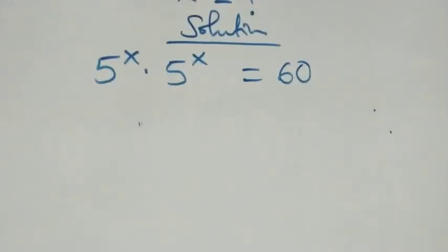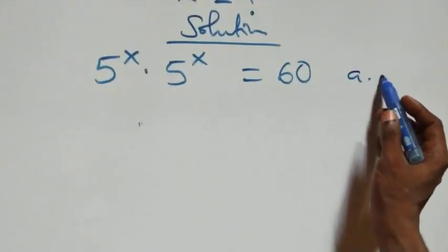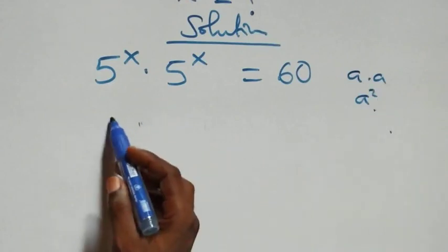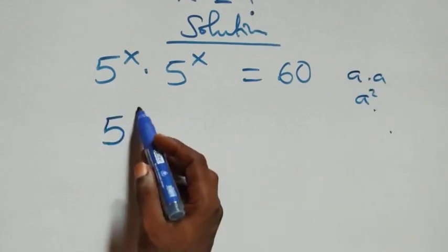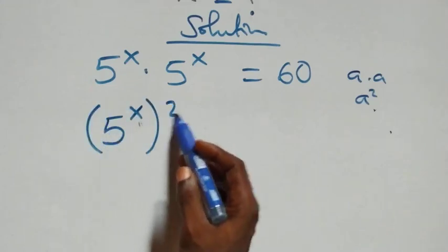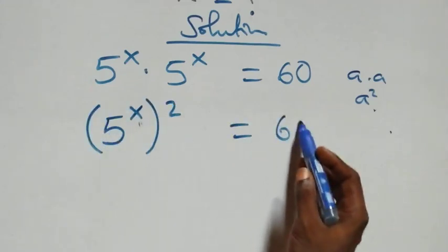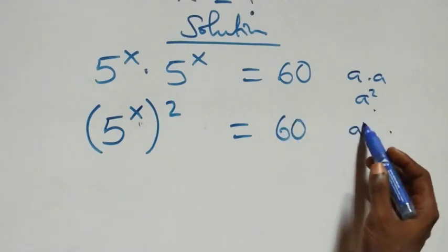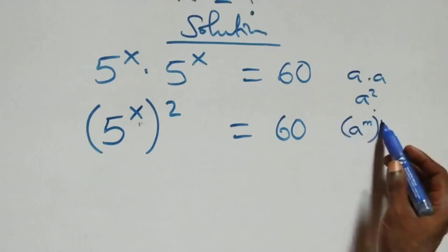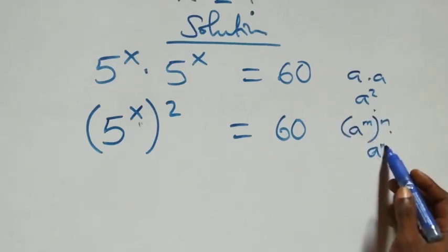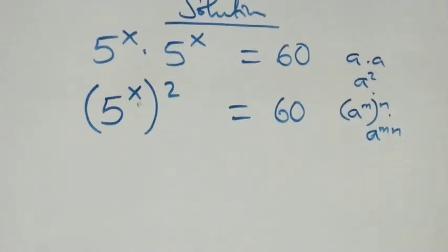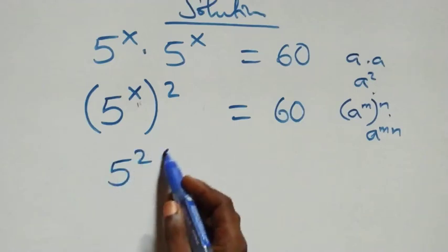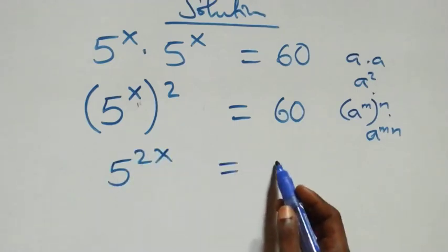This follows from when we have a times a, which can also be written as a squared. So we have the same thing multiplying, giving 5 raised to power x plus x. Then applying the rule that a raised to power m raised to power n equals a raised to power mn, the powers multiply and this becomes 5 raised to power 2x equals 60.